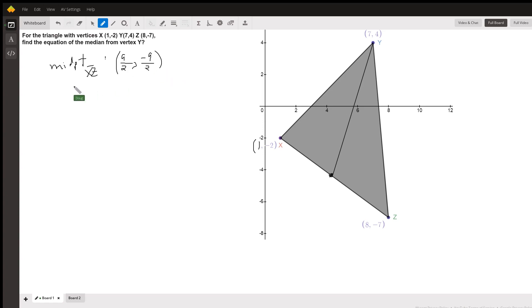Now the slope would be the change in y over the change in x. So the change in y is 4 minus the y coordinate of this point. Let me put this here. 9 halves, negative 9 halves. So 4 minus a negative 9 halves is the same as 4 plus 4.5 over change in x, 7 minus 4.5.